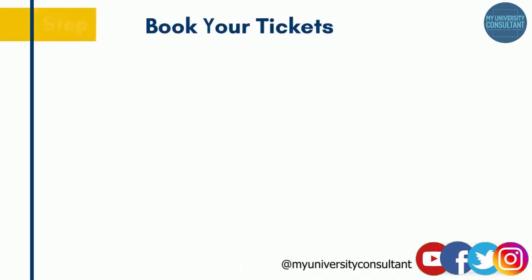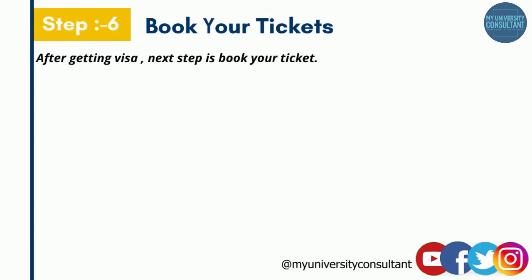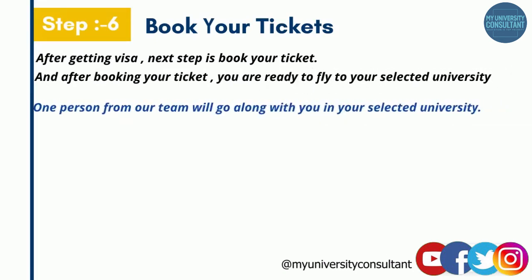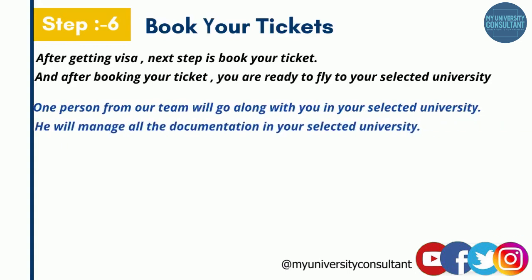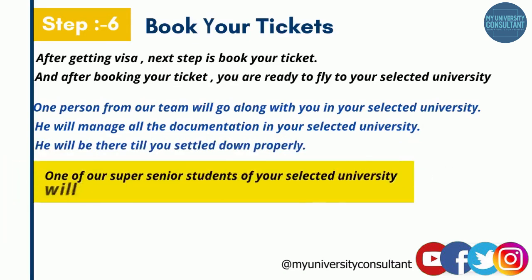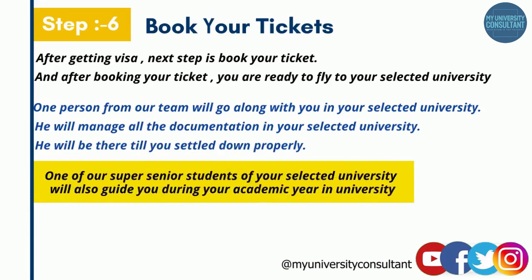Step six is book your ticket. After getting the visa, the next step is to book your ticket. After booking your ticket, you are ready to fly to your selected university. One person from our team will also go along with you to your selected university. He will manage all the documentation at the university and will stay until you settle down properly. One of our senior students from your selected university will also guide you during your academic year.